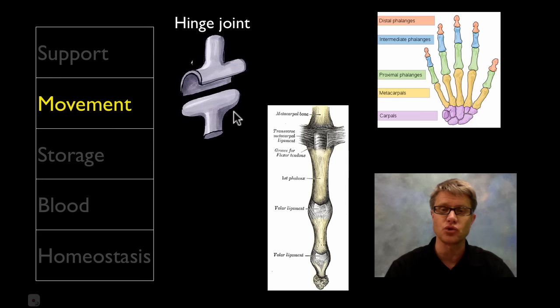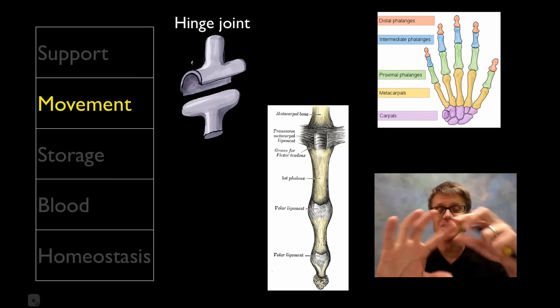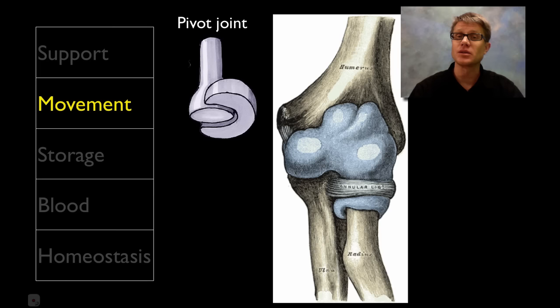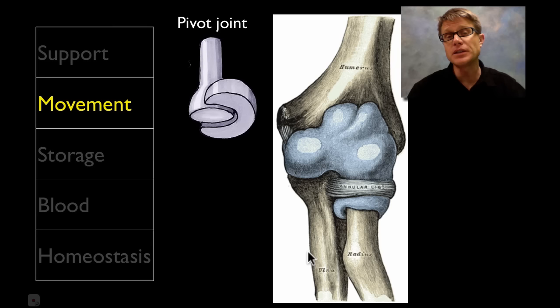Next we've got the hinge joint — just like a door hinge that only moves in one direction. Your fingers, or phalanges, have that. When you go like this, that's a hinge joint, and hopefully you can't move your finger in either other direction. The last one is a pivot joint. A great example is where the humerus meets the radius and ulna, right at the elbow. Basically I can move my arm this way and like that — it's just pivoting around that center point. All these joints allow movement between the bones.